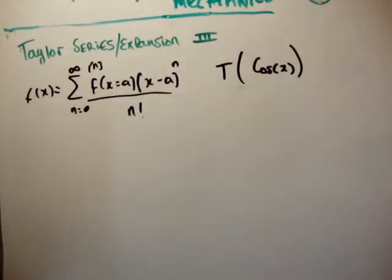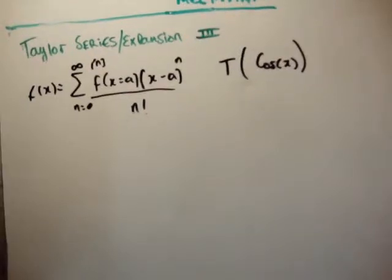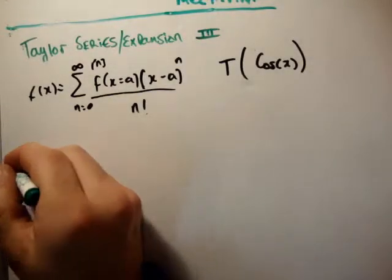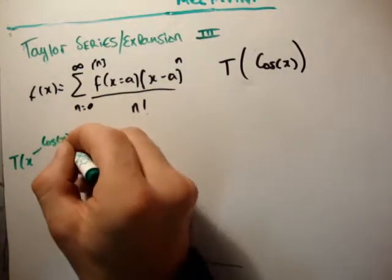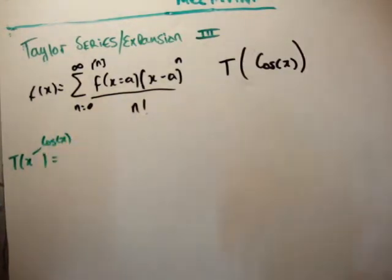Now we have our n coefficients calculated pretty straightforwardly. Thereafter, we need to evaluate the function at x equals a, or shift the function to x equals a. But we haven't decided what a is at the moment. So that means our Taylor expansion is as follows: the Taylor expansion of f(x) where f(x) equals cos x